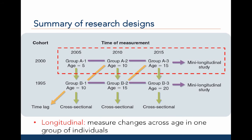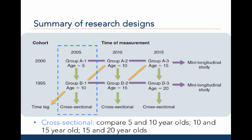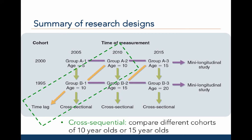To summarize the different research designs: longitudinal designs measure change across time in one individual or groups — for example, following group A at ages 5, 10, and 15. In cross-sectional designs, we measure different groups at one time point — for example, comparing group A at age 5 and group B at age 10 in 2005. In cross-sequential designs, we compare different cohorts — for example, studying group A at age 10 in 2010 and comparing them with group B at age 10 in 2005.